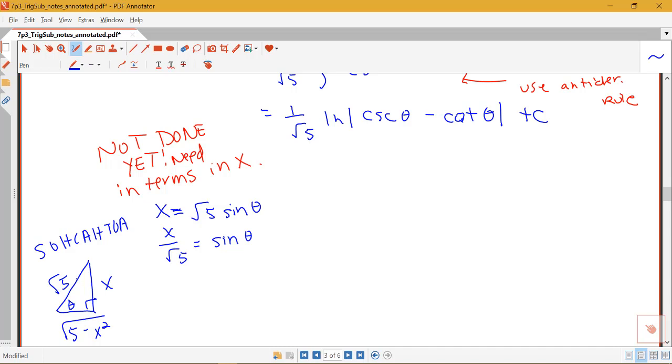So now that I have this triangle here, I can figure out what cosecant of theta is using the sides of this triangle here as well as cotangent of theta. So I say I'm going to have 1 over root 5 is log. Now cosecant theta is just 1 over sine. So I know that that's actually root 5 over x. Cotangent theta would be 1 over tangent or adjacent over opposite. So I'm going to have the square root of 5 minus x squared over x. And that's all in absolute value plus c.